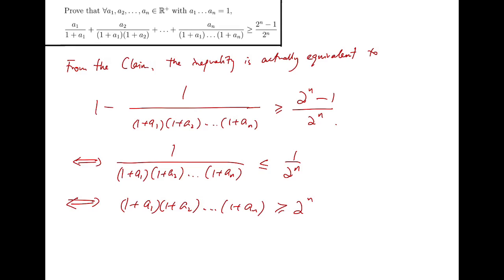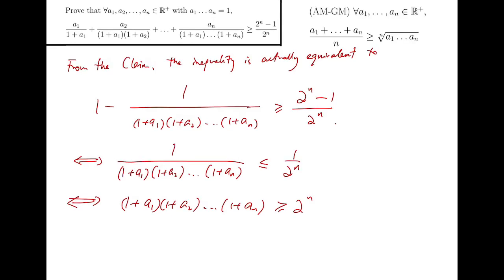So, this product is actually supposed to be at least 2 to the n. Now, this inequality is easy to prove because it is a direct consequence of the AM-GM inequality. Just to remind you again that the AM-GM inequality says, for any n positive real numbers, the arithmetic mean is always greater than or equal to the geometric mean.